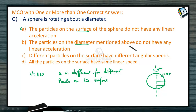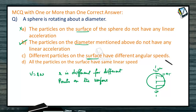Particles on the mentioned diameter do not have any linear acceleration — they only move along with the axis, therefore option B is correct. Different particles on the surface have the same angular speed, but different linear speeds, so option C is also wrong.